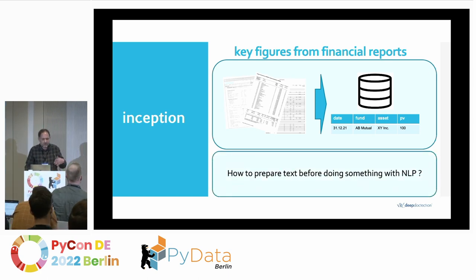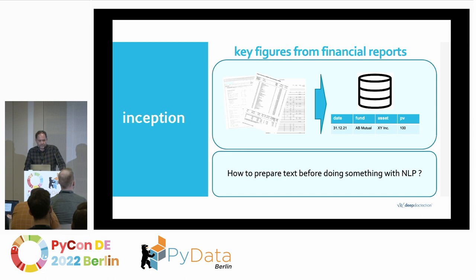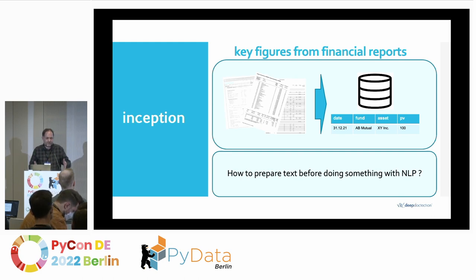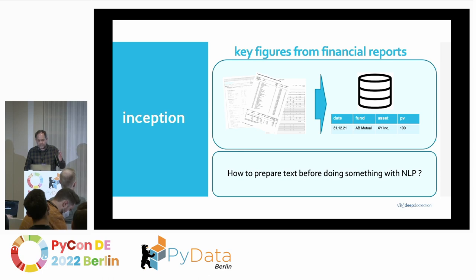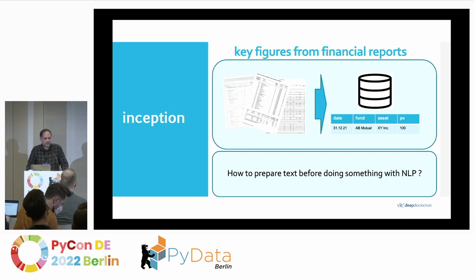I started thinking about how to automate this. The naive first approach was quite straightforward: first you somehow need to parse the document, and second you need to do something with NLP. But when I tried to work on this problem I got stuck at the very first step — namely, how do you get all this information which is often trapped in PDF documents, or even scanned documents, out of these documents in order to process it further?